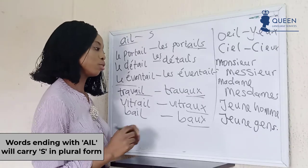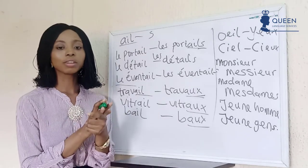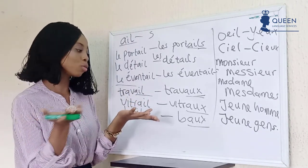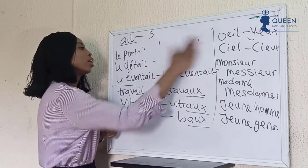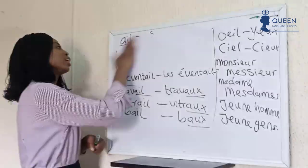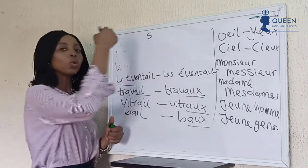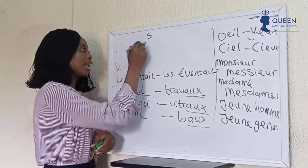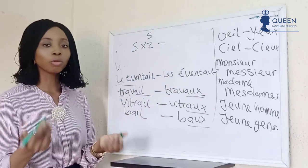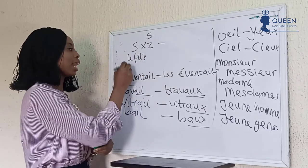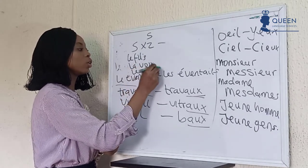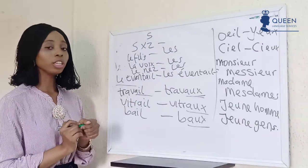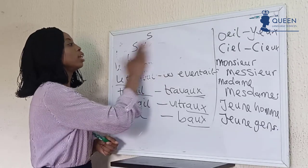That is it for today's video. These are some of the plural forms in French language — the ways we can detect our plural endings. In summary: we have words that naturally just add -s like in English; we have words whose endings are -s, -x, or -z where the ending doesn't change in plural; just the article changes and the word remains the same.